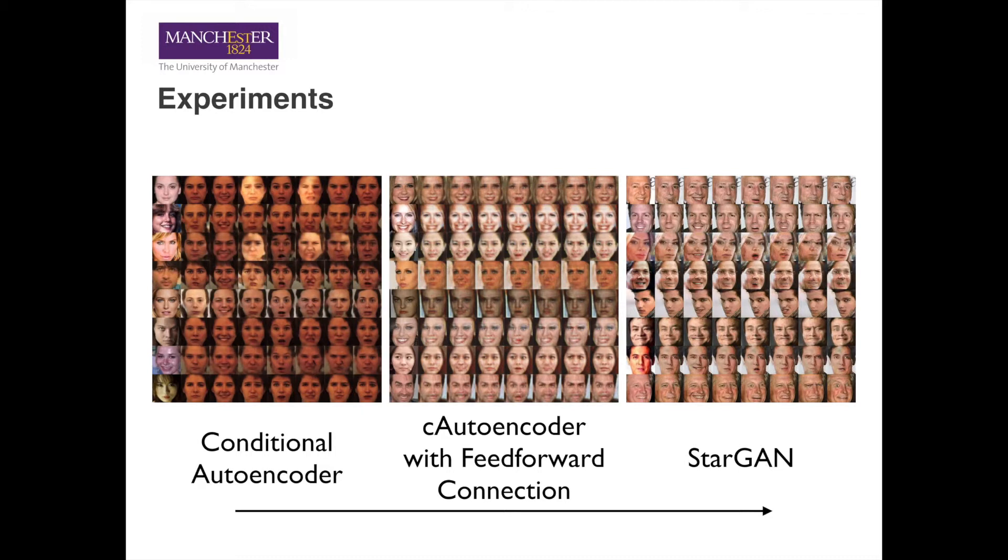Another paper proposed a solution by adding extra feedforward connections in the network, which helped with maintaining the identity, although the generated image was not sharp enough.